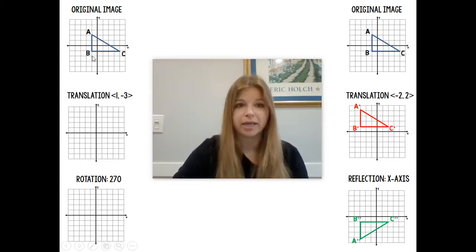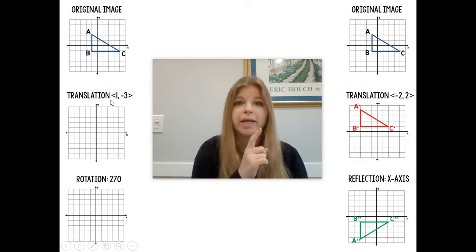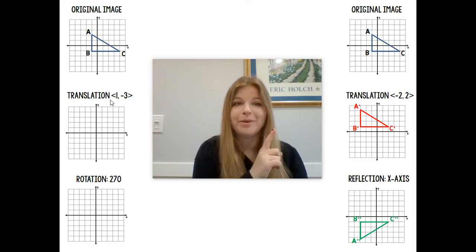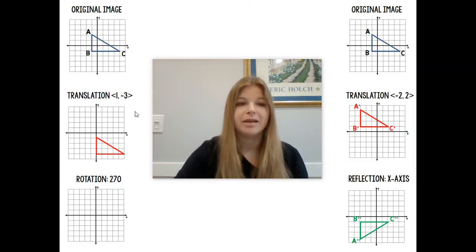Same triangle ABC as the previous one. If this triangle undergoes a translation of 1, negative 3, that means I'm going to go 1 unit to the right and then 3 units down. So if I take this figure and move it 1 to the right and 3 units down, my figure lands here, with labels A prime, B prime, C prime.